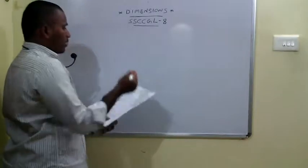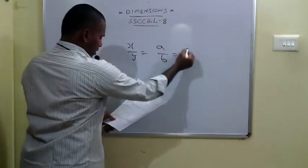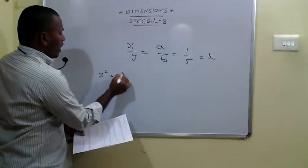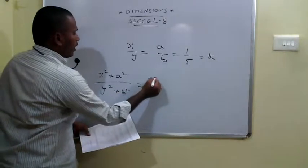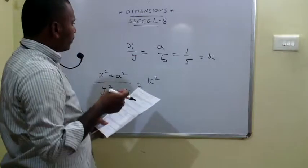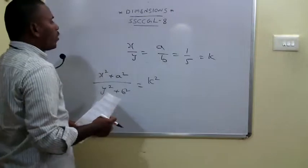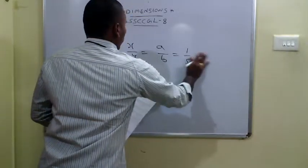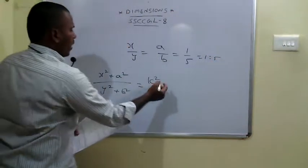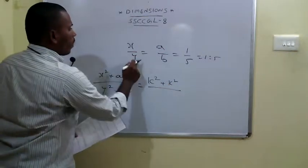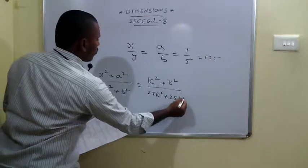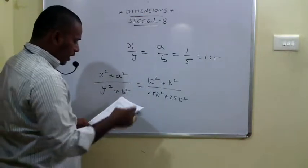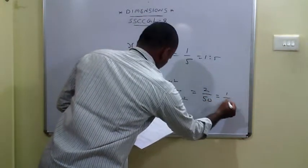The 56th problem: x to y and a to b are given as 1 to 5. We need to calculate x squared plus a squared divided by y squared plus b squared. Taking x equals k, a equals k (1 part each), y equals 5k, b equals 5k. The numerator is k squared plus k squared equals 2k squared, and the denominator is 25k squared plus 25k squared equals 50k squared. So the answer is 2 by 50, which is 1 by 25. Since none of the options match, the answer is 'none of these'.